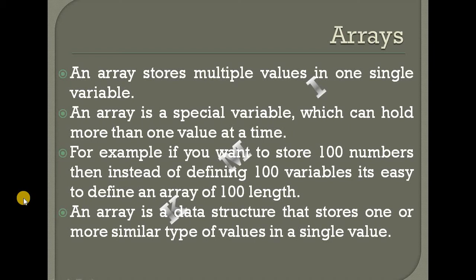An array is a data structure that stores one or more similar types of data — similar type of values — in a single variable. It is a homogeneous collection of data.